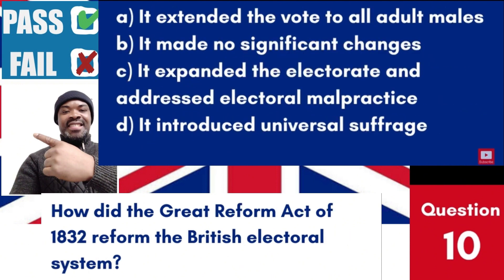Question 10: How did the Great Reform Act of 1832 reform the British electoral system? a. It extended the vote to all adult males. b. It made no significant changes. c. It expanded the electorate and addressed electoral malpractice. d. It introduced universal suffrage. Answer: c. It expanded the electorate and addressed electoral malpractice. The Great Reform Act of 1832 made significant changes by expanding the electorate and reforming the electoral system to make it more representative.